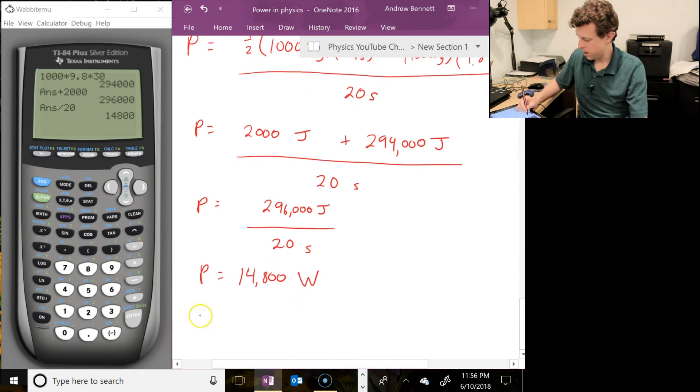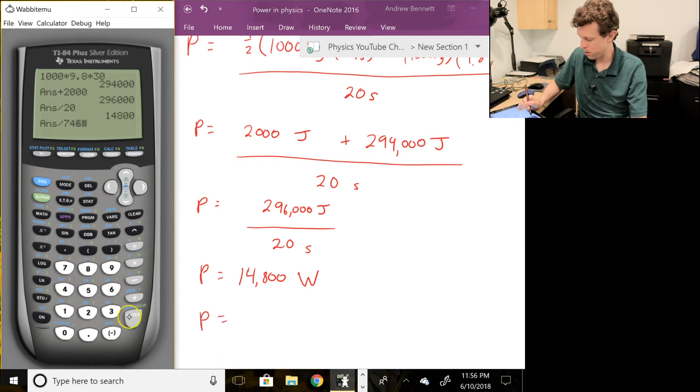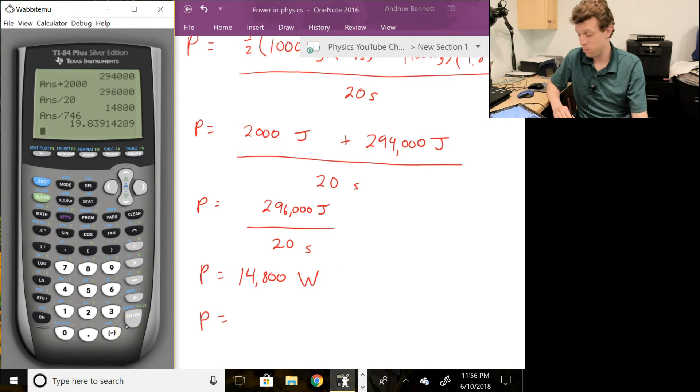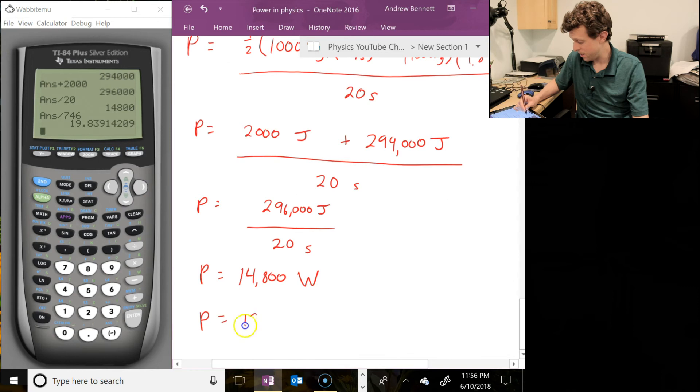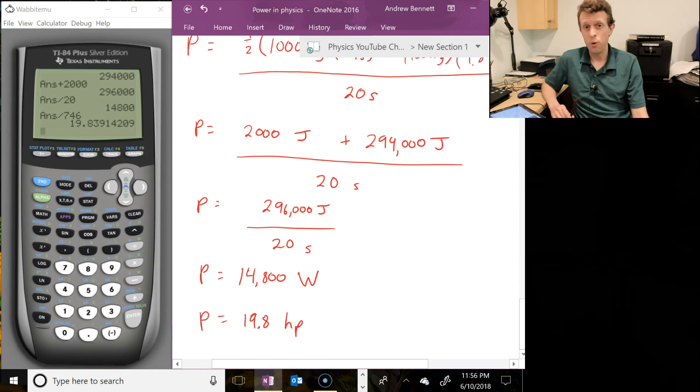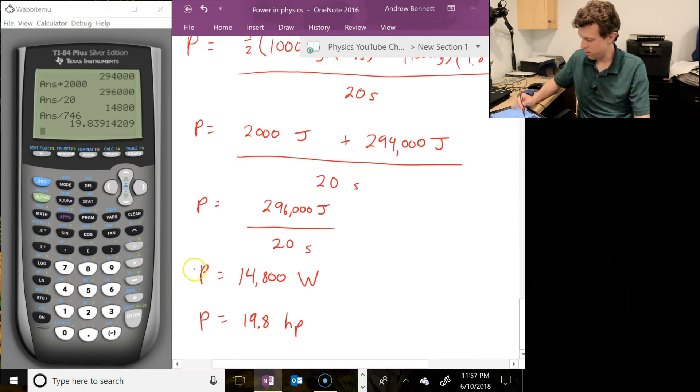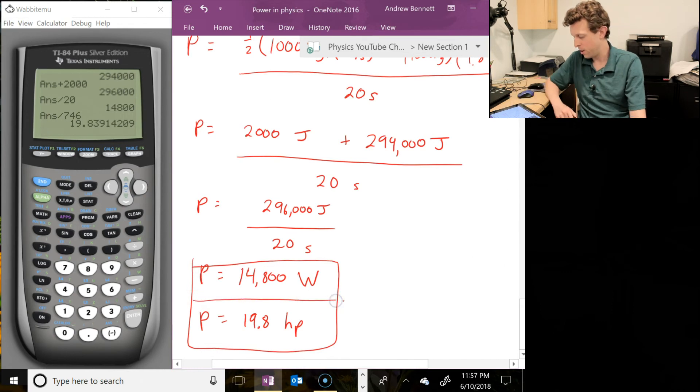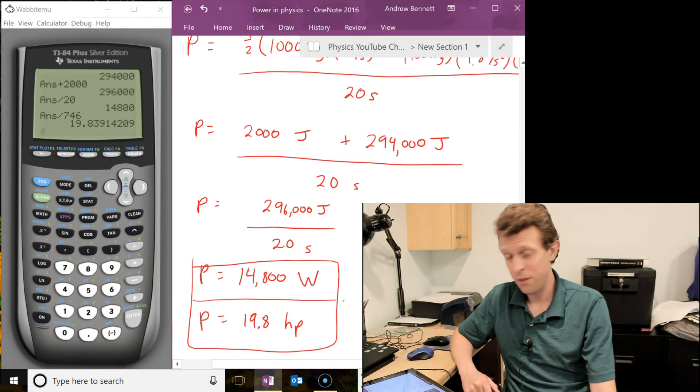And in case we are interested here, let's go ahead and divide that by 746. That's our conversion to horsepower. And that tells us this would be a 19.8 horsepower output. That's not necessarily the horsepower of the motor itself, but what it's outputting at that moment, probably not operating at its highest level possible. So either of these would be acceptable answers for the power output on that motor lifting the elevator up.